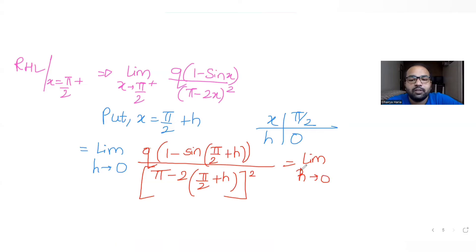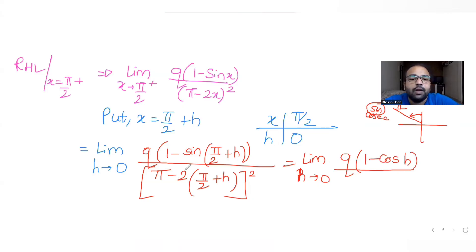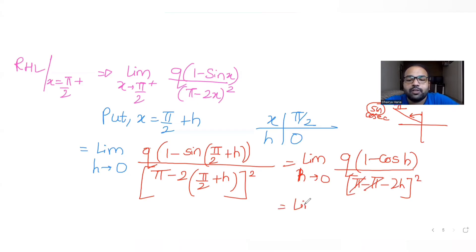Since sin(90° + θ) = cosθ and 90° + θ is in the second quadrant where cosine is negative — but here sine is positive — the numerator becomes q(1 - cosh). The denominator simplifies: π - 2(π/2 + h) = π - π - 2h = -2h, so (-2h)² = 4h².